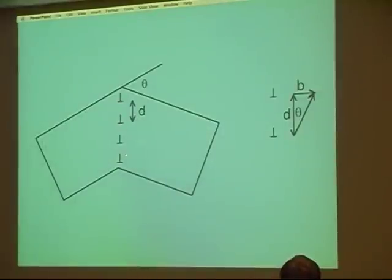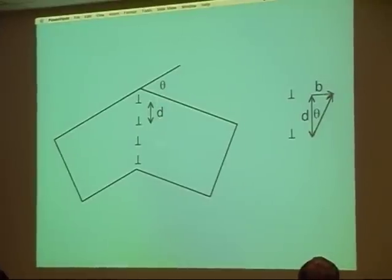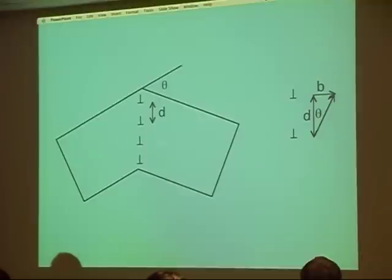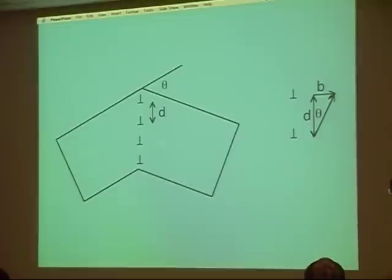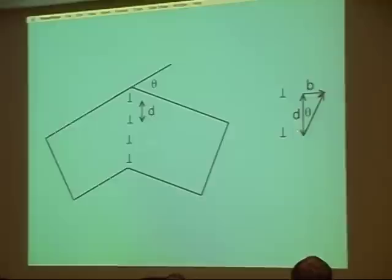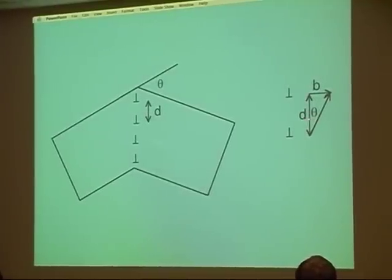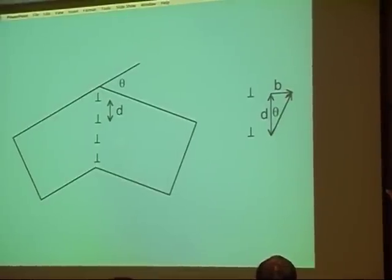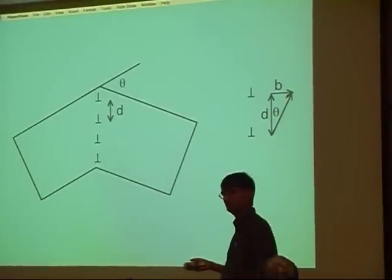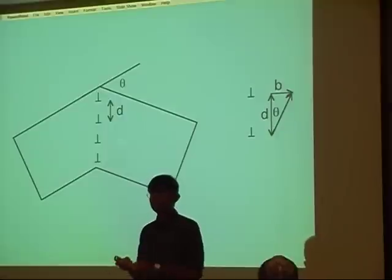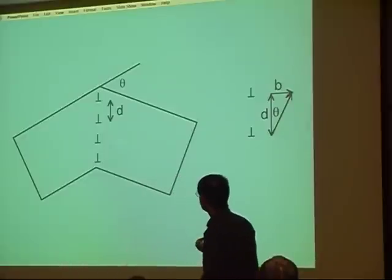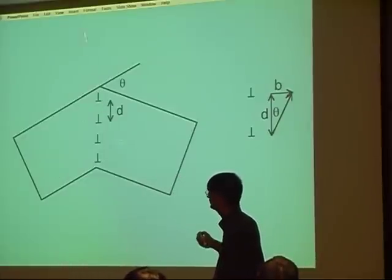As I put more and more dislocations inside this boundary, the misorientation theta increases. When I have a large misorientation, I expect the distance between the dislocations in the boundary to be smaller. That is obvious from the geometry: the spacing D is related to the angle theta because the tangent of theta is simply the Burgers vector of the dislocation divided by the spacing between the dislocations. So we now have the structure of a grain boundary described in terms of dislocations, which are defects, and they have an energy per unit length. If I add up the energies per unit length of all those dislocations, then I get the energy of the boundary.